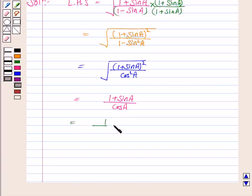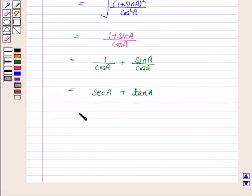This equals 1 upon cos A plus sine A upon cos A. 1 upon cos A is secant A, sine A upon cos A is tan A, which is equal to RHS. Hence the result is proved.